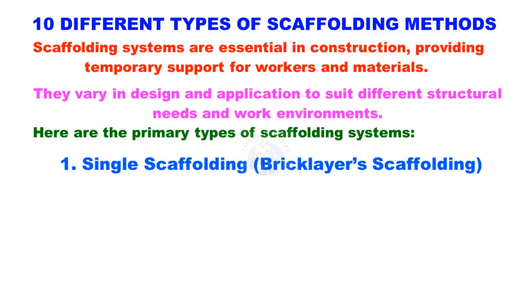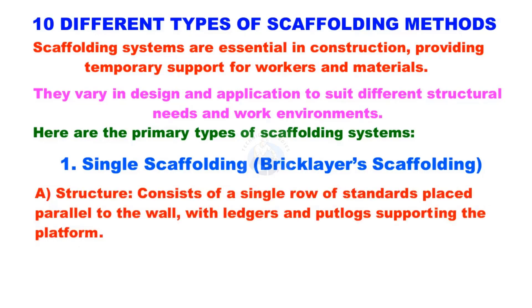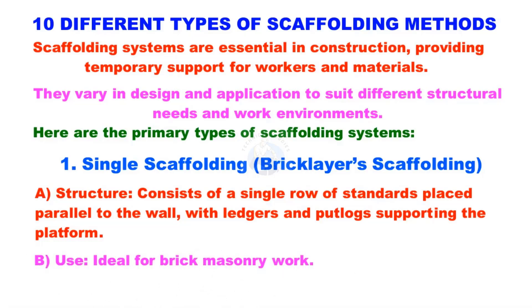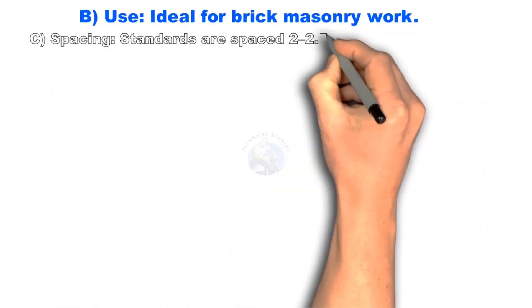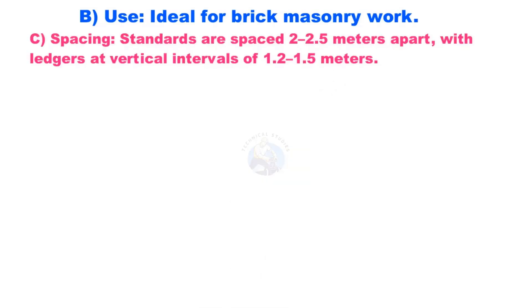Single Scaffolding, or Brickless Scaffolding. The structure consists of a single row of standards placed parallel to the wall, with ledgers and putlogs supporting the platform. This type of scaffolding is ideal for brick masonry work. Standards are spaced 2 to 2.5 meters apart, with ledgers at vertical intervals of 1.2 to 1.5 meters.